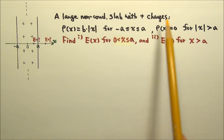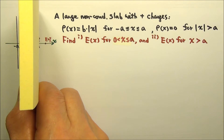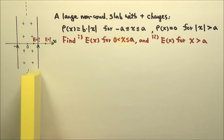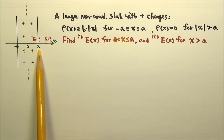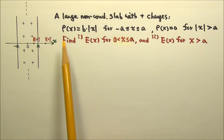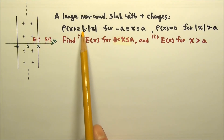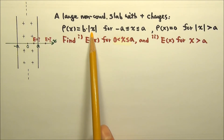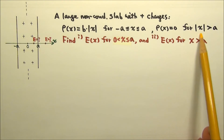Here we have a very large non-conducting slab with positive charges. The slab is drawn edge-on, so it is perpendicular to the screen. The left surface of the slab is at x equals negative a, and the right surface is at x equals a, so the thickness of the slab is 2a. The volume charge density rho within the slab is a positive constant b times the absolute value of x, and there is no charge outside the slab.